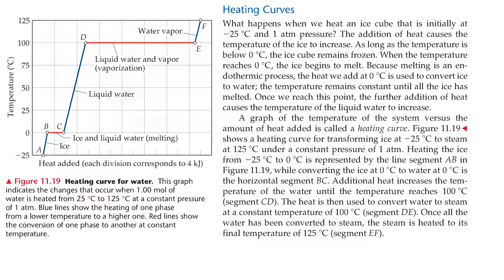What happens when we melt an ice cube initially at negative 25 degrees Celsius at one atmosphere of pressure? The addition of heat causes the temperature of the ice to increase. As long as the temperature is below zero Celsius, the ice cube remains frozen. When the temperature reaches zero Celsius, the ice begins to melt. Because melting is an endothermic process, the heat added at zero Celsius is used to convert ice to water, and the temperature remains constant until all the ice is melted. Once all the ice is melted, further addition of heat causes the temperature of the liquid water to increase. A graph of temperature versus the amount of heat added is called a heating curve. Figure 11.19 shows a heating curve for the transformation of ice at negative 25 Celsius to steam at 125 Celsius under a constant pressure of one atmosphere. Heating the ice from negative 25 to zero Celsius is represented by line segment AB, while converting ice at zero to water at zero Celsius is the horizontal segment BC.